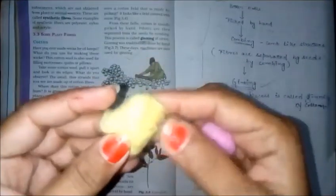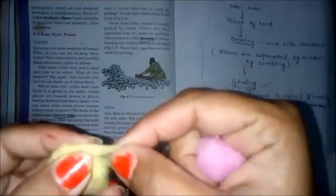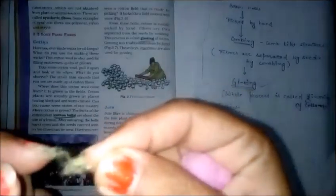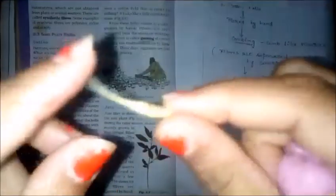Students, see I am showing you cotton balls. In these cotton balls, these are the very thin strands which you have studied in your chapter. When these thin strands are twisted and turned, they become a strand. So many thin strands together, when they come together, form yarn, and yarn is used to make fabric.